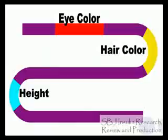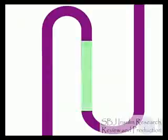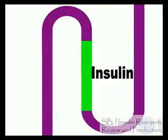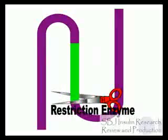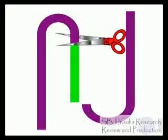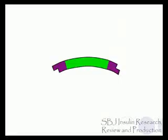An organism is genetically modified when its genes have been changed. There is also a gene in your DNA that makes insulin. Insulin is what Prem needs. So, to get this gene, we use restriction enzymes to cut it out. Restriction enzymes are like scissors. They cut your DNA at certain sections.